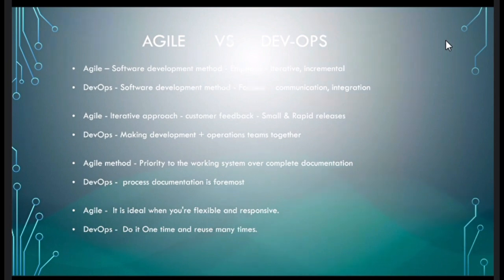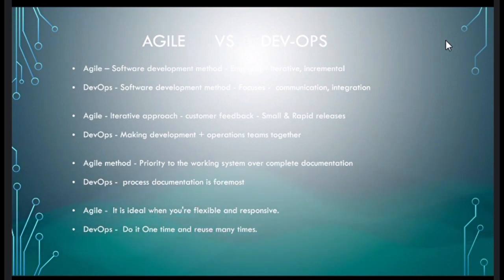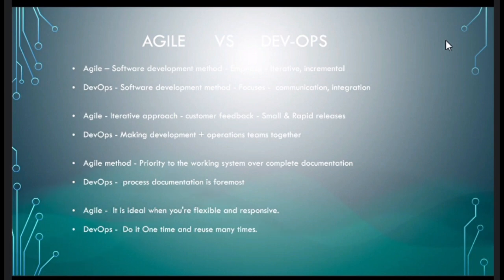Whereas in DevOps, we mainly focus on communication and integration. Before developing automation, we need to talk to different teams and understand the current manual way. If the manual way is working fine, we put a tool stack in place to replace the current manual work. If scripts are required, we write them so the manual work can be done via script or tool. To gather these requirements, communication with different teams is key.